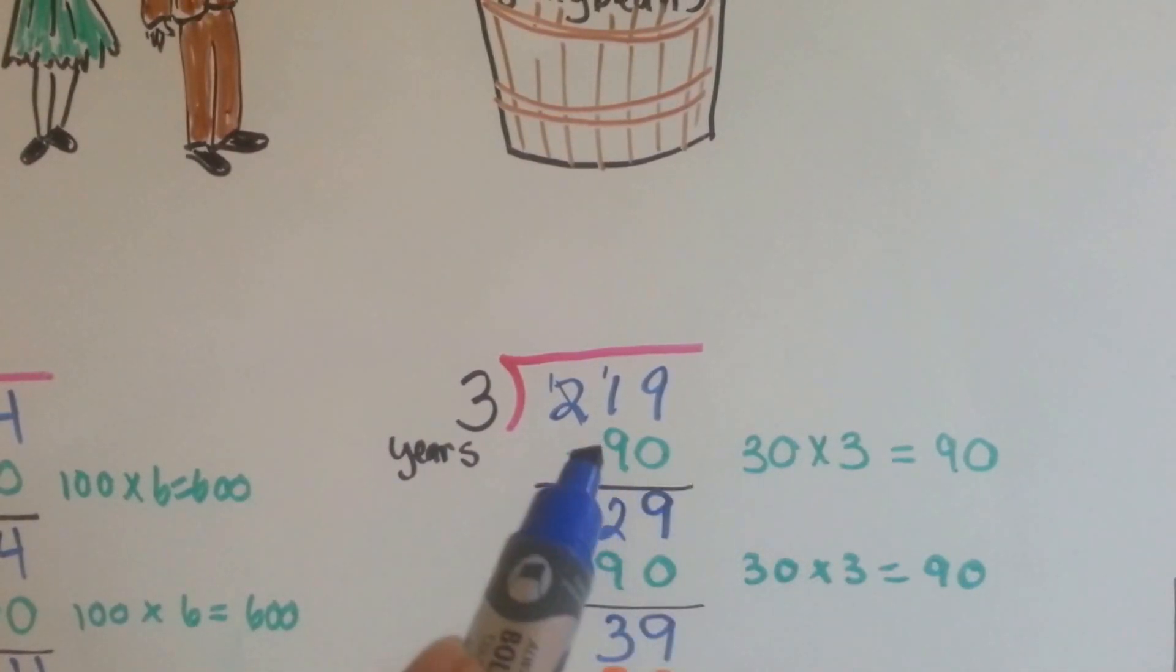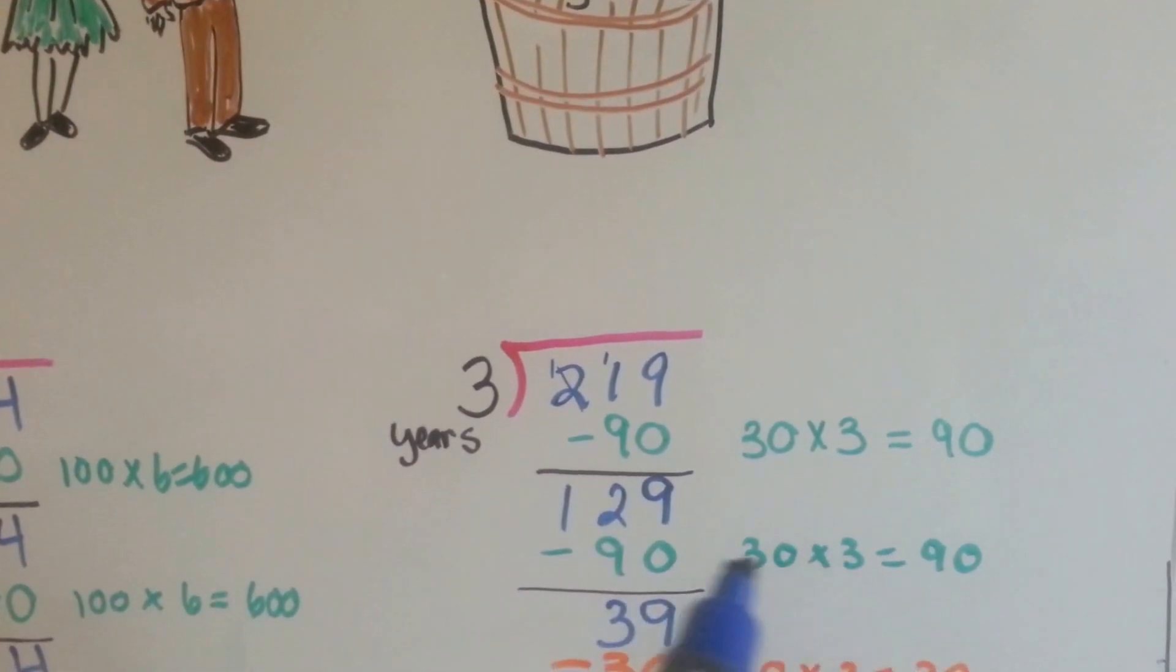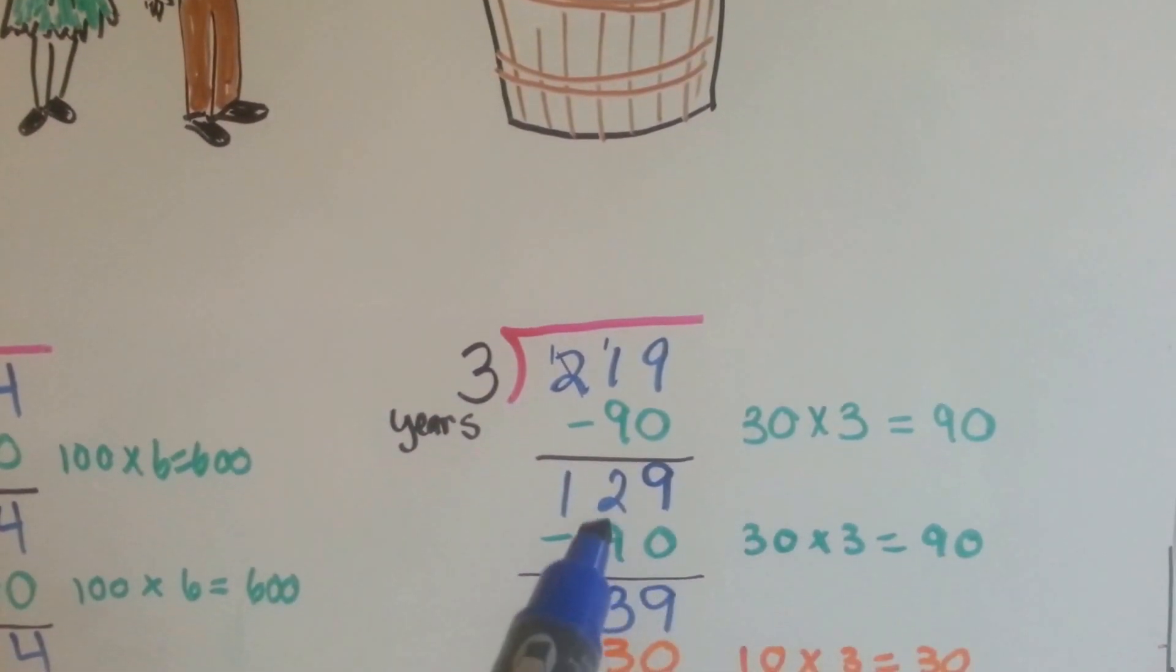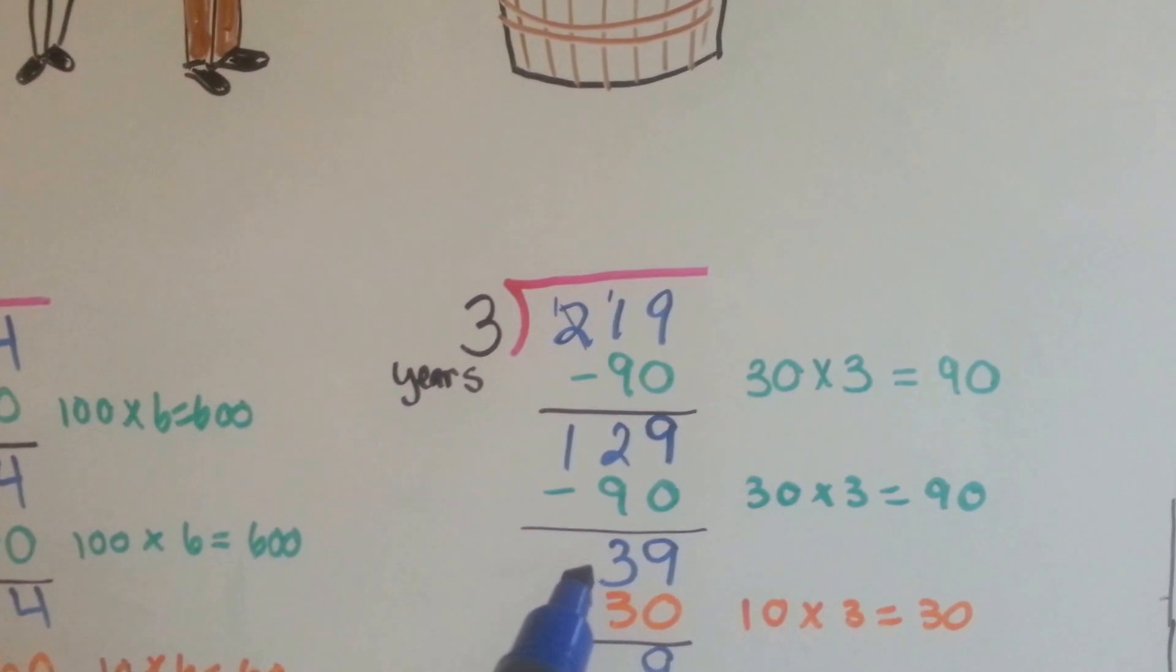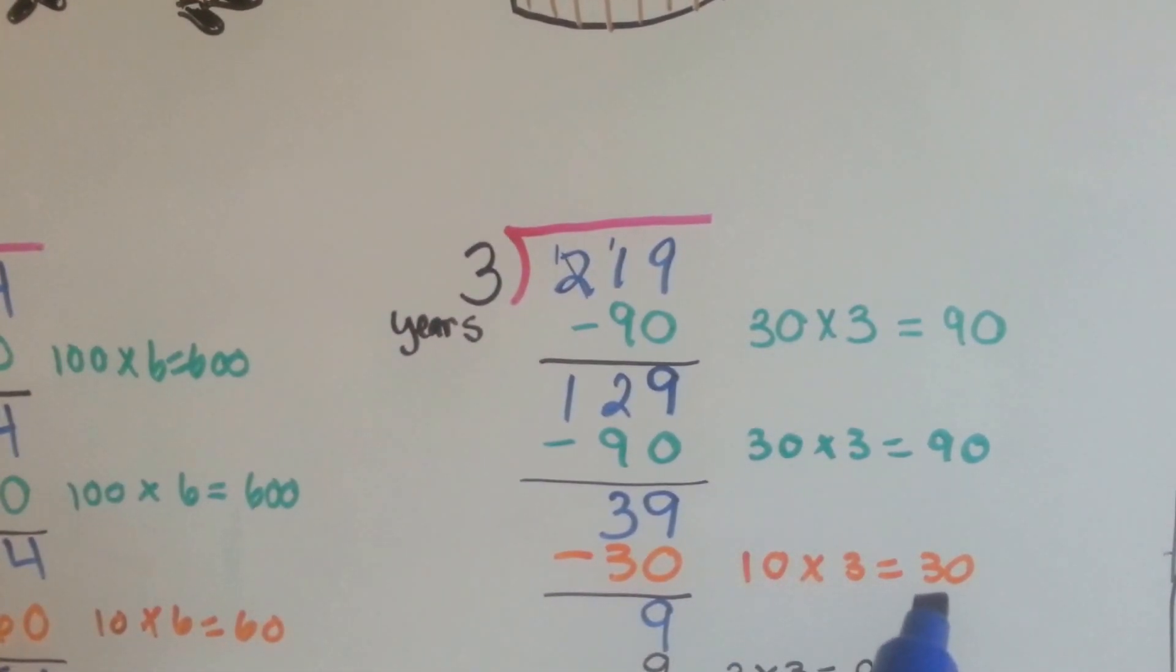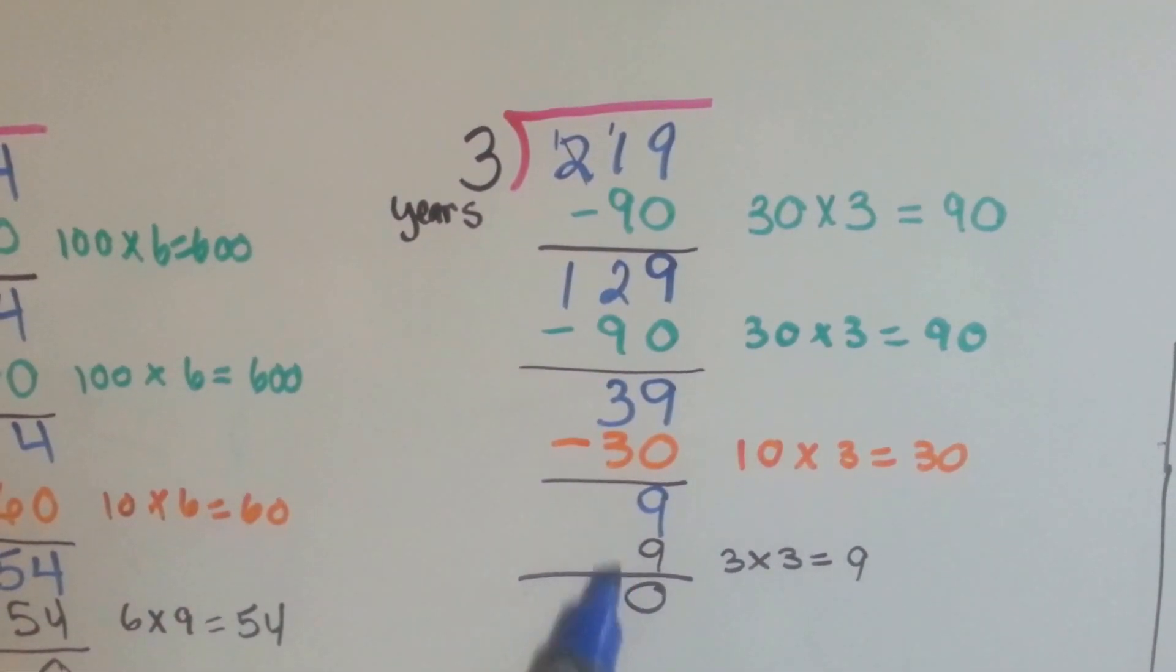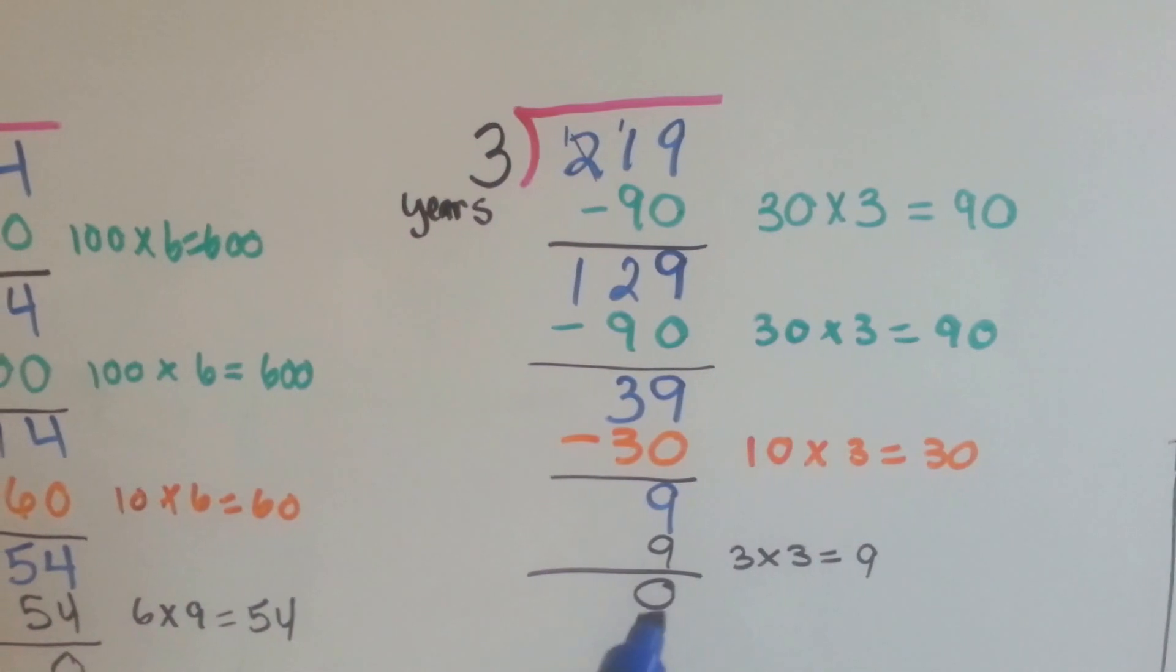I know 30 times 3 is 90, so I can take that away. That leaves us with 129. I can do another 30 times 3, which is 90, and take another 90 away. That leaves us with 39. I know 10 times 3 is 30, so we can take a 30 away. That leaves us with 9, and 3 times 3 is 9. We get a zero left over.